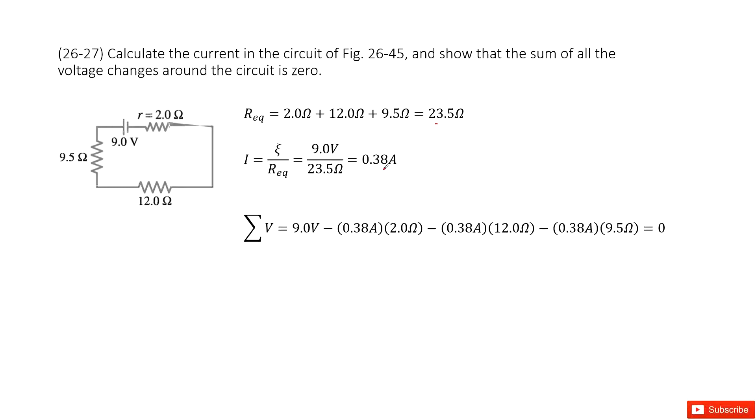The next one shows the sum of all voltage changes around the circuit is zero. This is Kirchhoff's loop rule, right? And we can see initially we have 9 volts and then the current goes through this way, right? And when the current goes through a resistor, the voltage decreases, right?